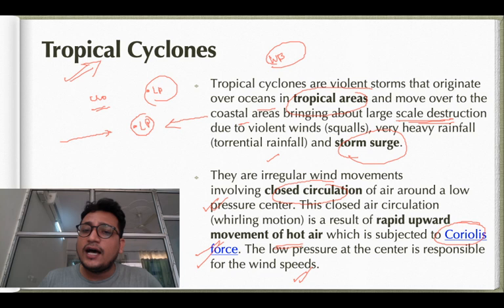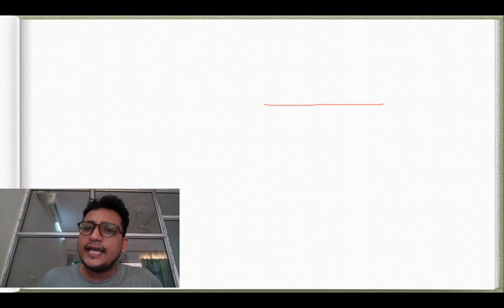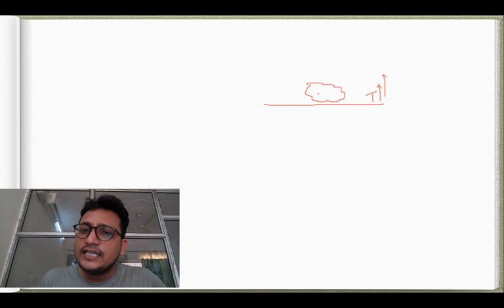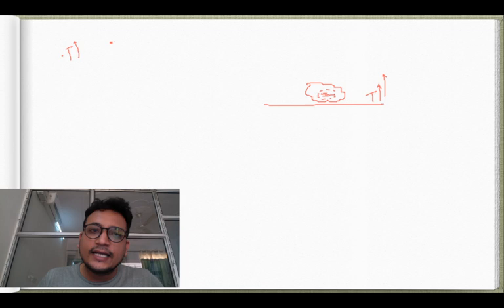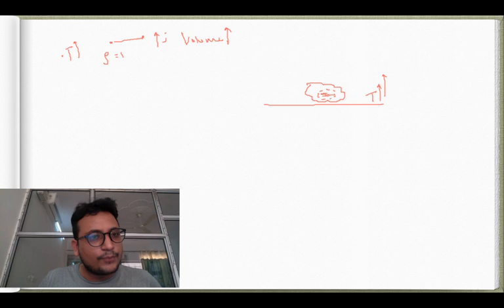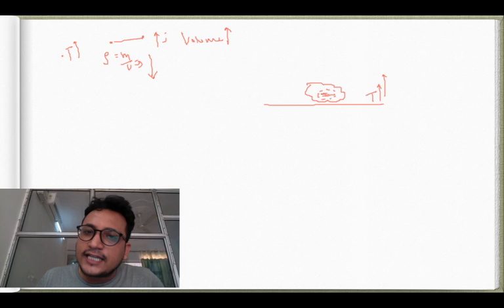Now we need to understand how rising of hot air happens. Let's say this is an air parcel. The surface temperature becomes very high. As the temperature increases, the distance between particles increases, so volume increases, and since density = mass/volume, density decreases. As density decreases, this air parcel feels lighter and starts rising from the surface. As it rises, the pressure it was exerting on the surface is gone, and low pressure develops there.